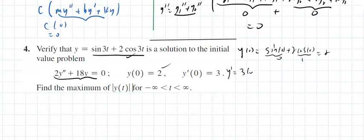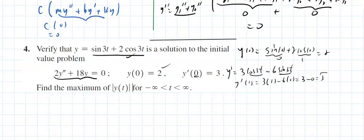Taking the derivative: y-prime equals 3·cos(3t) minus 6·sin(3t). Plugging in t=0: that's 3 times cosine of 0, which is 1, minus 6 times sine of 0, which is 0. That gives 3 minus 0 equals 3. So y-prime(0) = 3 checks.